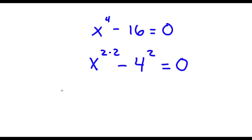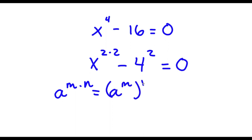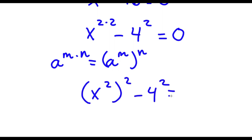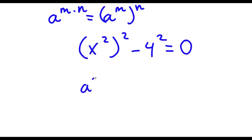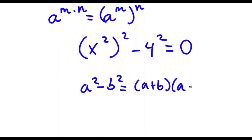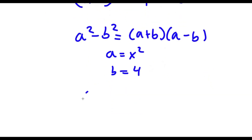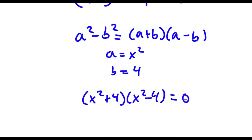Now, if I have something in the form a to the power of m times n, this equals a to the power of m to the power of n. So x to the power of 2 times 2 becomes x to the power of 2 to the power of 2, minus 4 to the power of 2 equals 0. Using the difference of squares — a squared minus b squared equals (a plus b)(a minus b) — where a equals x squared and b equals 4, I get x squared plus 4 times x squared minus 4 equals 0.